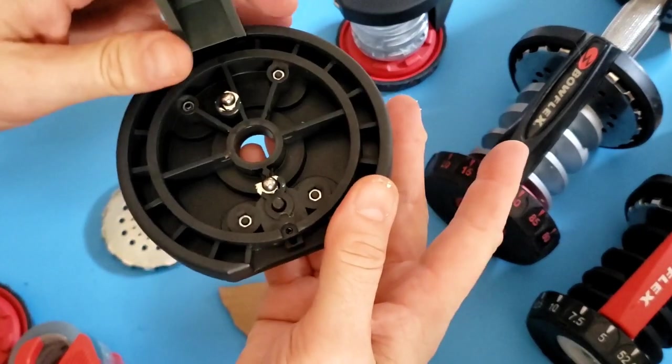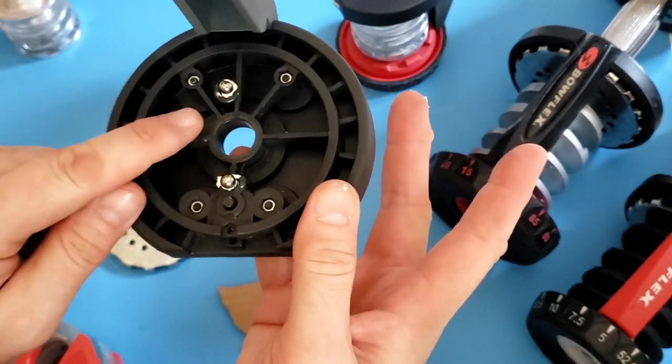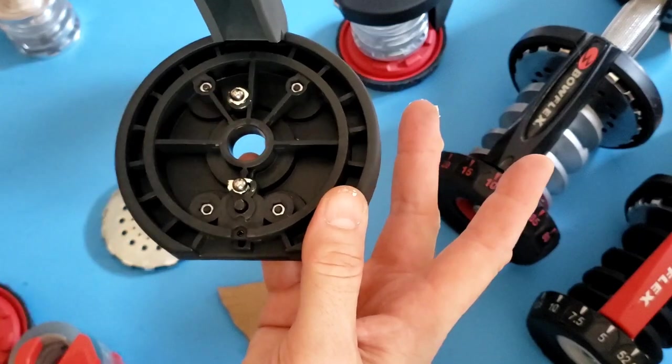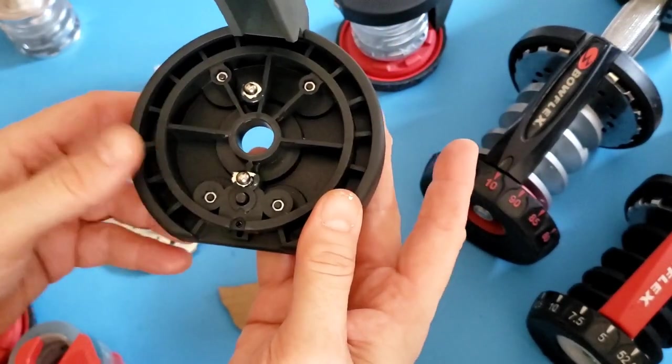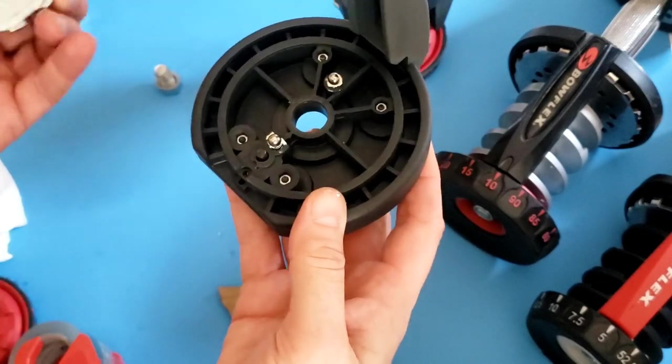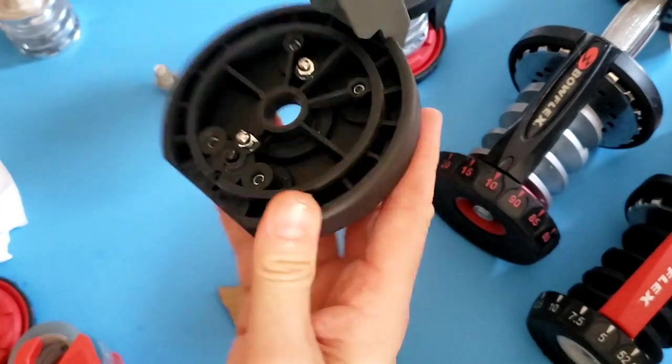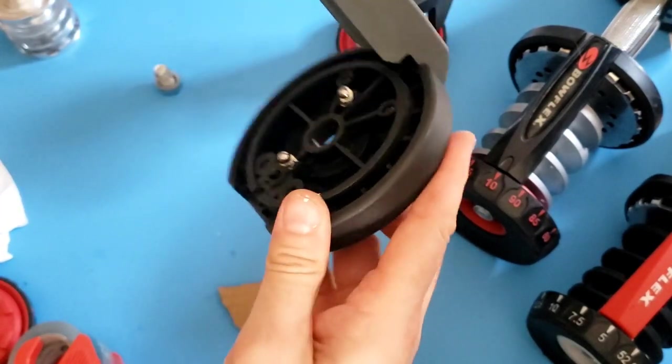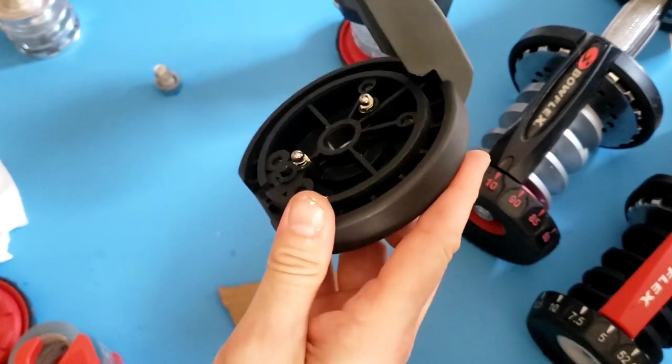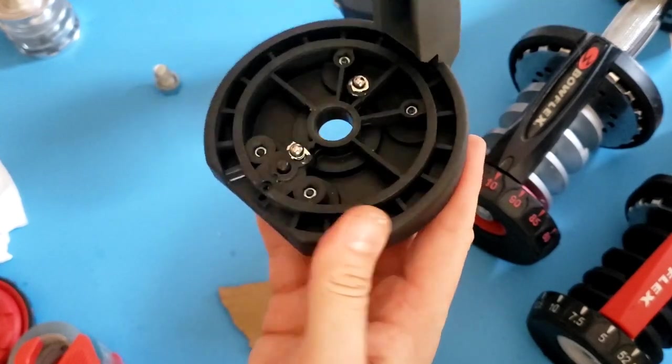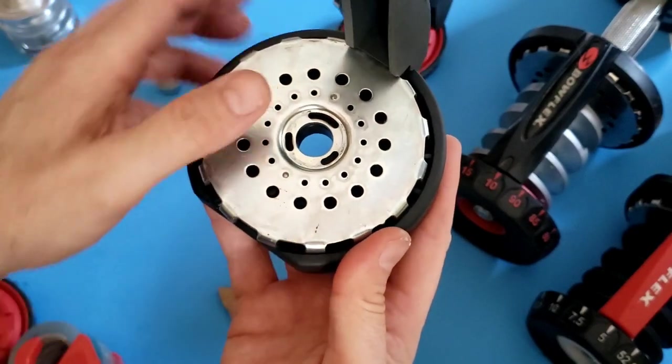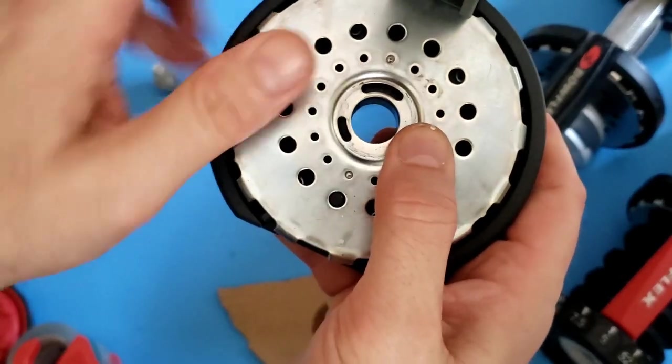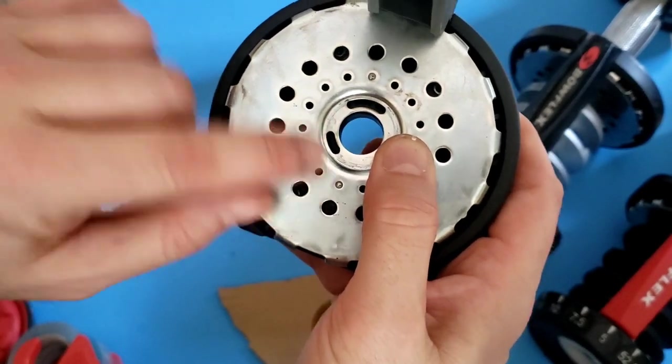And now your ball bearings are going to be stuck, if you will, to the springs. They're not going anywhere. Now you can see here I can move this component and the ball bearings are not falling off everywhere.